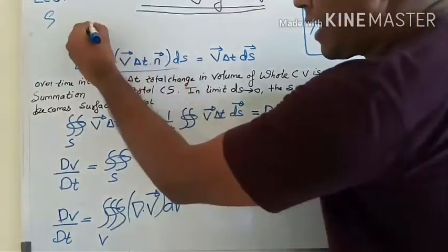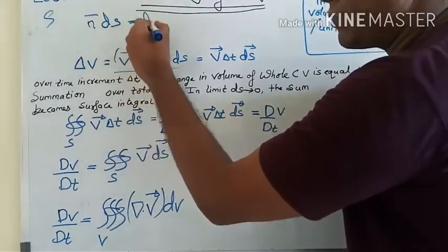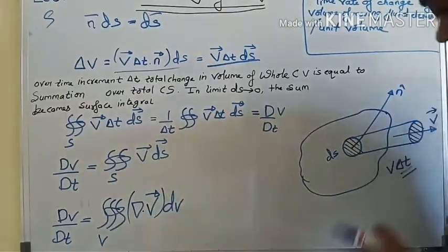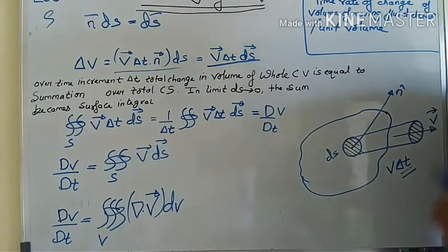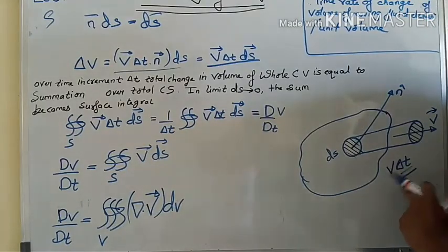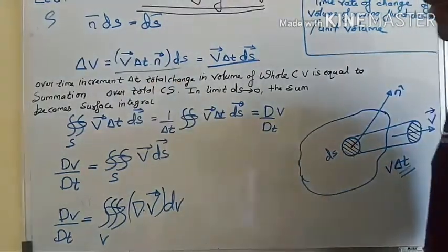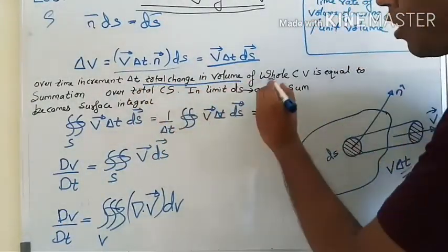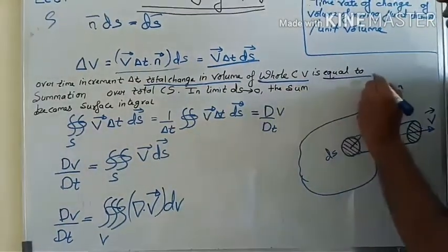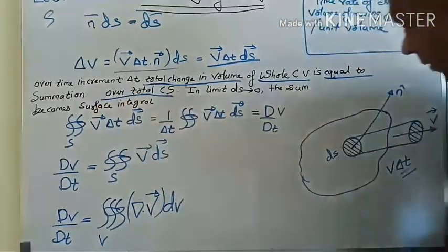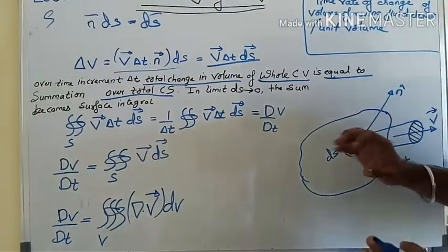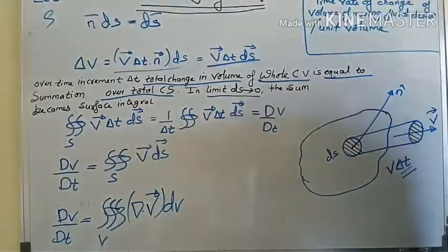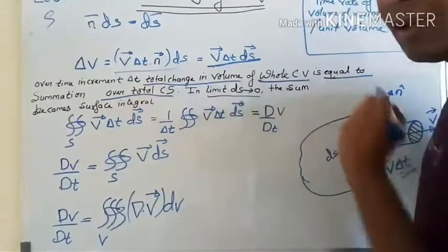We can write that n̂ ds vector is nothing but ds. So this is the change in the volume for a particular infinitesimally small surface moving with velocity V after time delta t. Now, if you want to find the total change in the volume of the whole control volume, it equals a summation over the control surface. We take a small control surface and sum it over the whole control surface, putting the limit ds tends to zero, so this term becomes a surface integral.